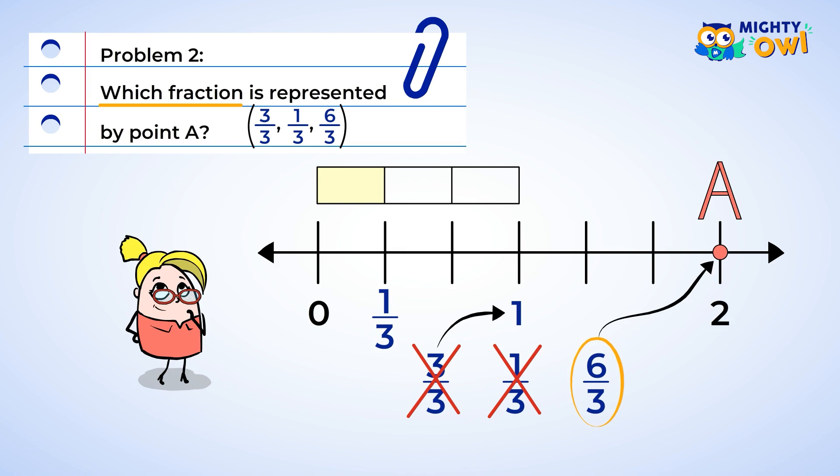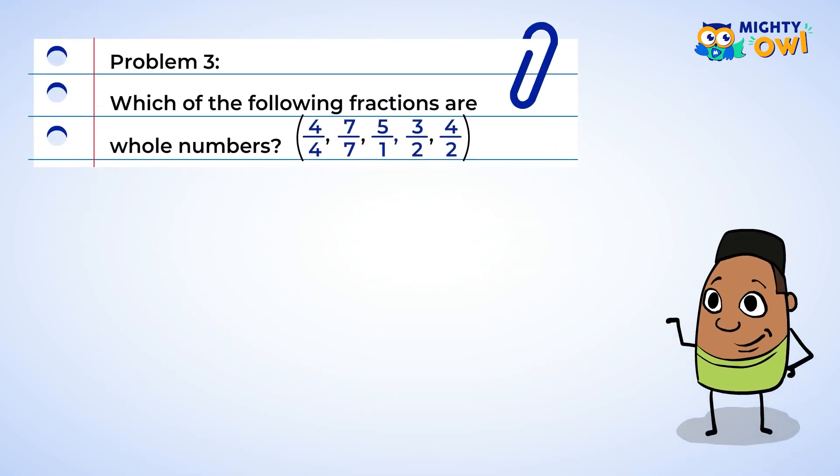There are so many ways to write out whole numbers. Let's determine which of these numbers represents a whole number. First, we learned that when the numerator and the denominator are the same, it is equivalent to one. So, four-fourths and seven-sevenths are whole numbers.